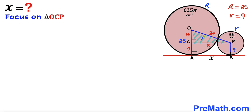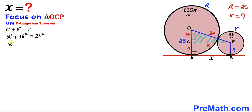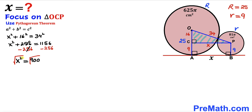Now let's focus on right triangle OCP and apply the Pythagorean theorem: a² + b² = c². The hypotenuse is OP = 34, and the two legs are OC = 16 and PC = x. Substituting: x² + 16² = 34², which gives x² + 256 = 1156. Subtracting 256 from both sides: x² = 900. Taking the square root of both sides, x = 30 cm.